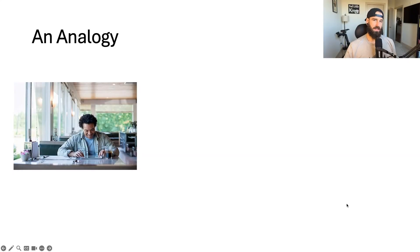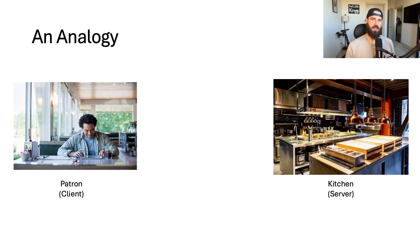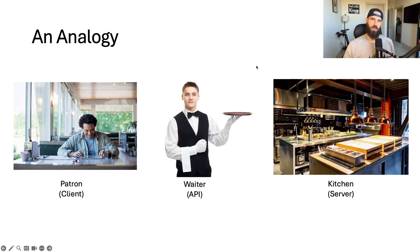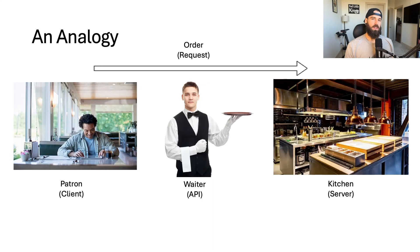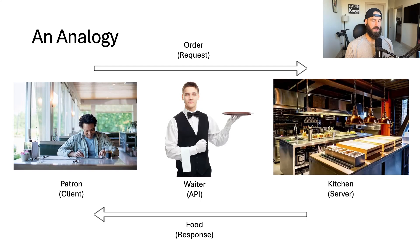APIs can be best understood through a restaurant analogy. A patron, or a client in API terms, enters a restaurant intending to order food. The patron knows the food is kept in the kitchen, or the server, but can't go get it himself. So how does he get what he wants? Enter the waiter, or the API. The waiter listens to the patron's order, or request, delivers it to the kitchen, which makes the food, or the response, and then the waiter delivers it back to the patron. Use this analogy to help visualize how REST APIs work at their core.